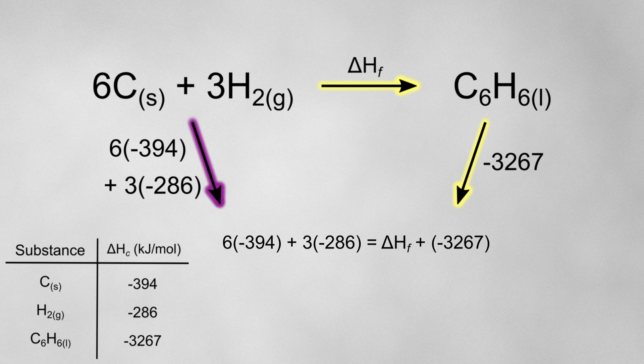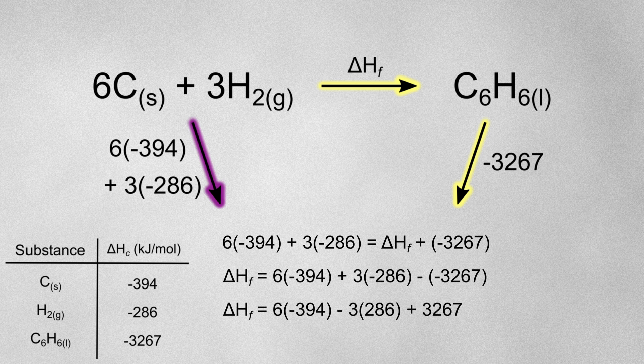Since I'm following the direction of the arrows for both routes, I can just use the enthalpies as they're written — no need to change the signs. With a bit of rearranging, we can calculate the enthalpy of formation for benzene, which comes out to plus 45 kJ per mole.